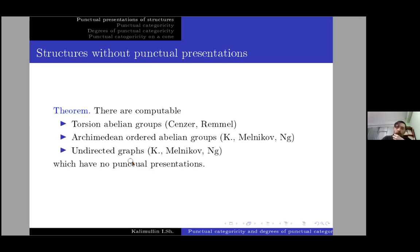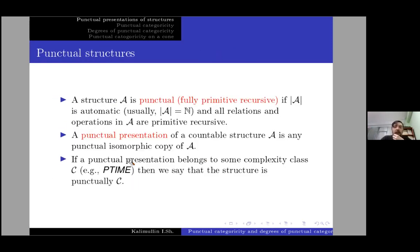In contrast with computability, here we emphasize the distinction between relations and operations. In classical computable model theory we can reduce all operations to relations and consider only relational structures, but here it is something different — relational structures are some specific structures and they are not universal.